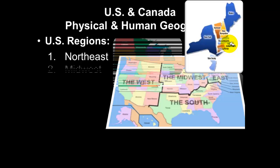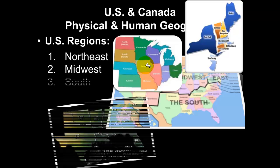The Midwest includes states like Illinois, Indiana, Missouri, Minnesota, South Dakota, North Dakota, Nebraska, Michigan, and Ohio. The South is easy to think about two ways: historically, it's most of the states that were in the Confederacy during the Civil War, or if you're a college football fan, it's most of the states in the Southeastern Conference — Louisiana, Mississippi, Arkansas, Tennessee, Alabama, Georgia, South Carolina, North Carolina, and Texas.